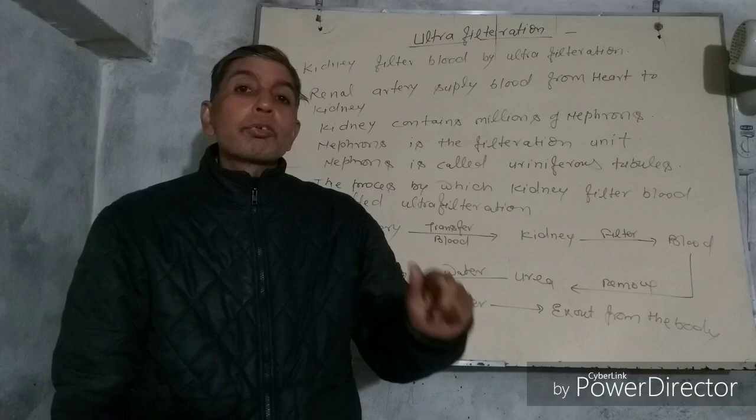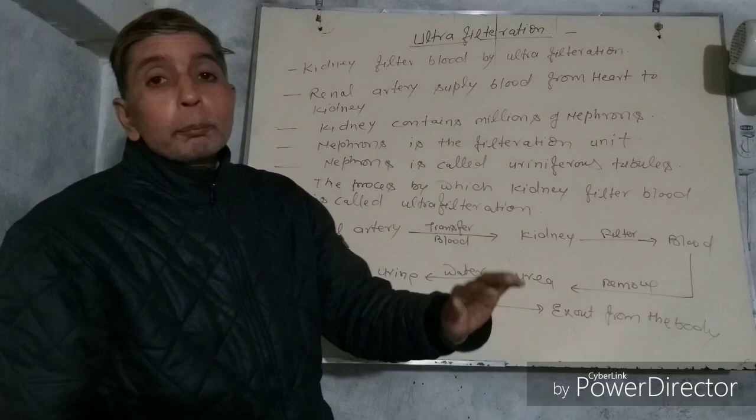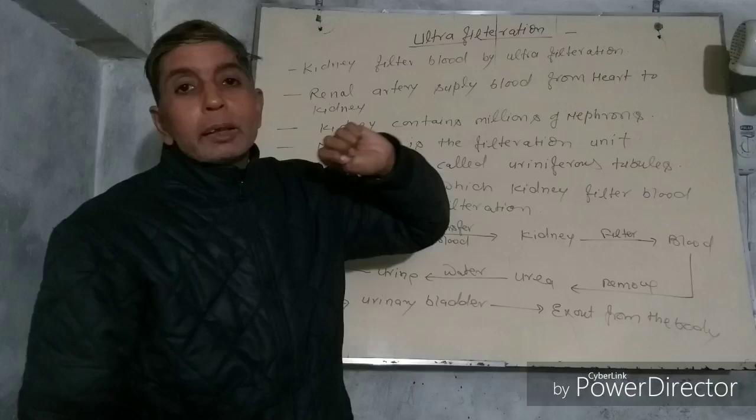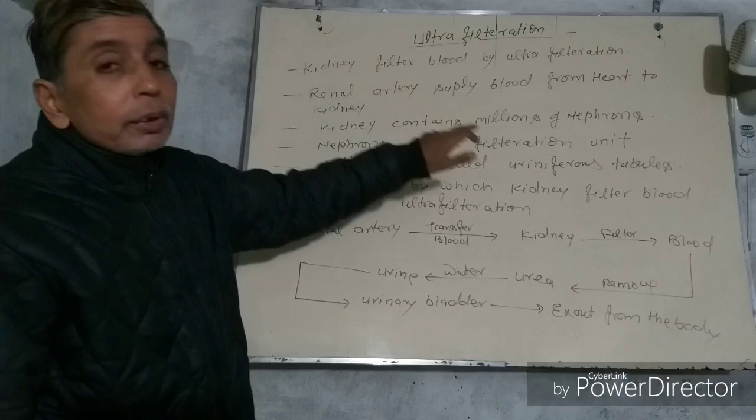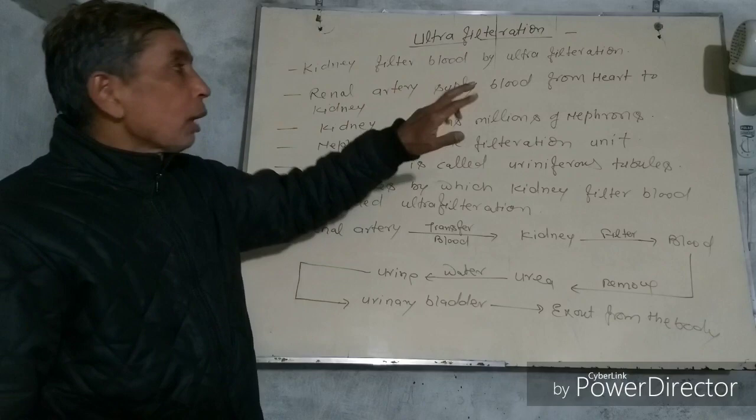The main toxic substance filtered by the kidney is urea. Urea is mixed within the blood. The process by which the kidney filters the blood is called Ultrafiltration. Ultrafiltration is the process by which the kidney filters the blood.